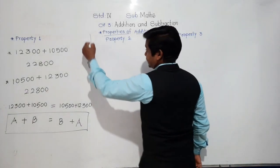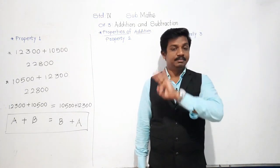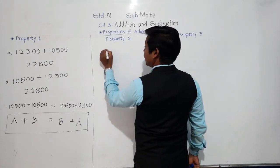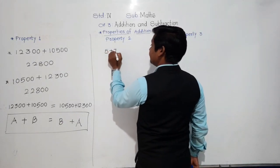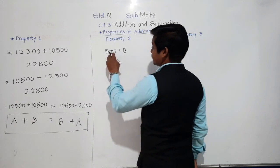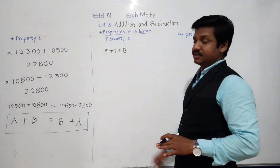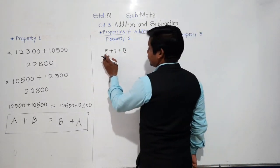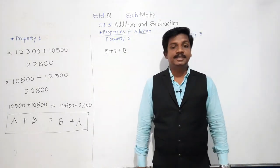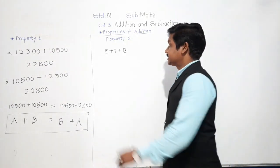The second property is about the addition of three numbers. For example: 5 plus 7 plus 8. The addition is 20. Now, with three numbers, you might wonder which two should be added first. Suppose you add 5 and 7 first — put them in a bracket.